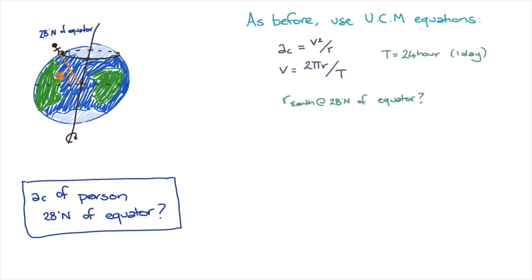If we sketch out the path the person follows alongside the radius of the earth, we can see that the person will follow a different circular path with a different radius than they did in the problem before.